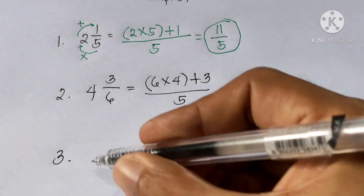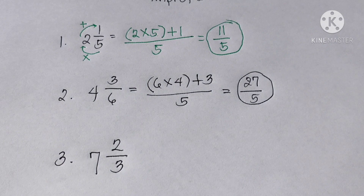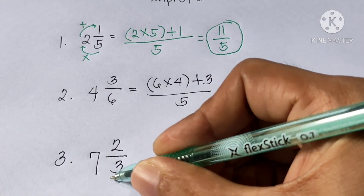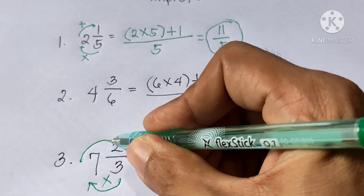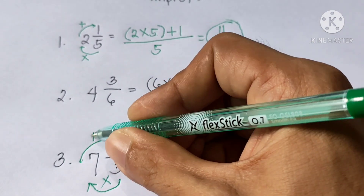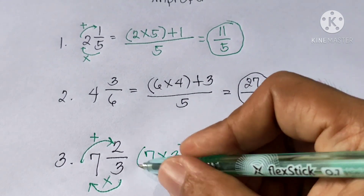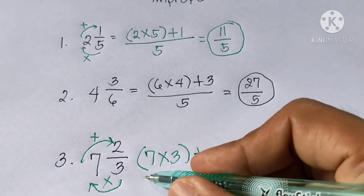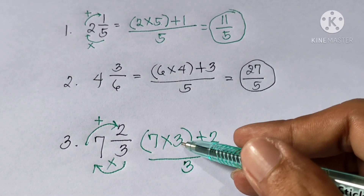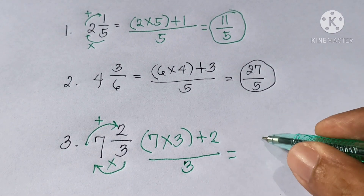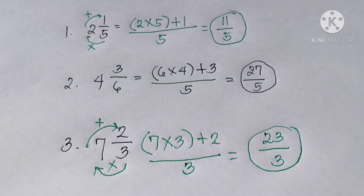Last example: 7 and 2 over 3. Again, multiply the whole number and the denominator: 7 times 3. Then add the numerator: plus 2. Copy the denominator, which is 3. So, 7 times 3 is 21, plus 2 is 23, over 3. So, 23 over 3 is the answer.